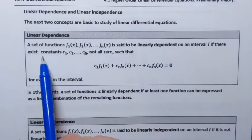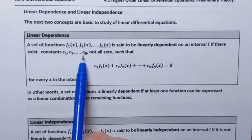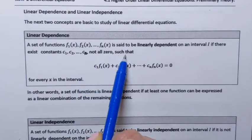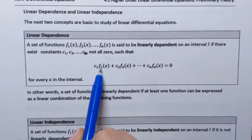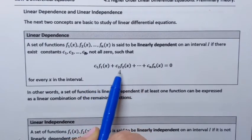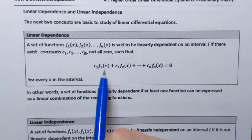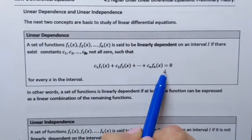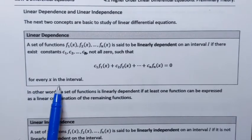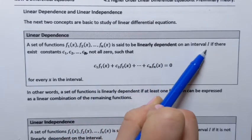If there exist constants c1, c2, up to cn — not all zeros, that's important — such that when you multiply each function by the corresponding constant and add them together, that equals zero. And another important note: this holds for every x value in that interval i.